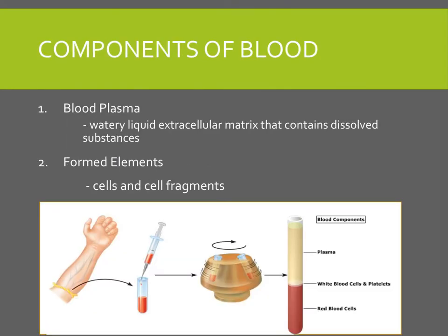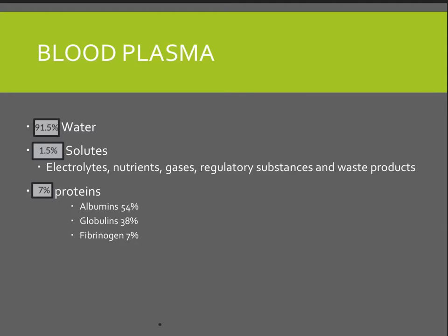The components of blood include blood plasma and formed elements. Blood plasma is a watery liquid extracellular matrix that contains dissolved substances, while formed elements are the cells and cell fragments. Blood plasma consists of 91.5% water, 1.5% solutes — which include electrolytes, nutrients, gases, regulatory substances, and waste products — and 7% proteins.